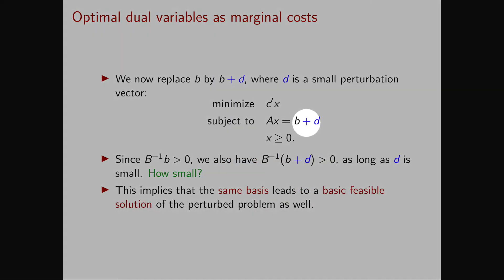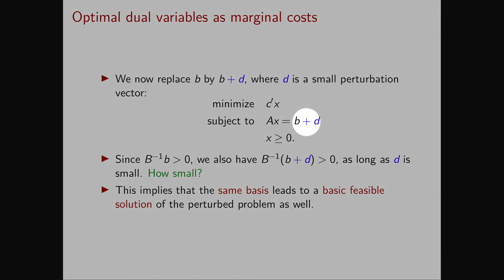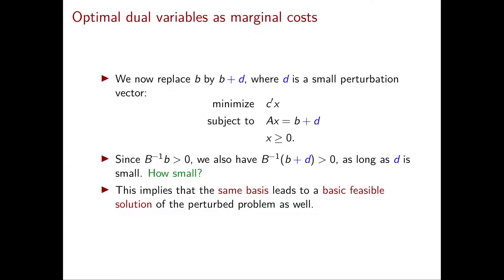Now we're going to slightly perturb the right-hand side vector B. So in our linear programming problem, we replace B with B plus D.